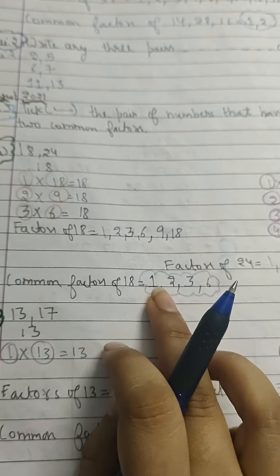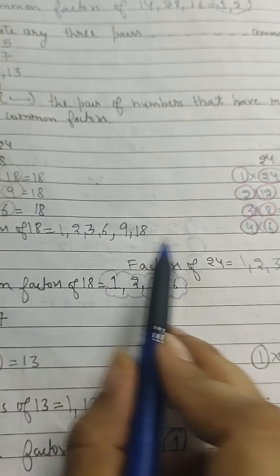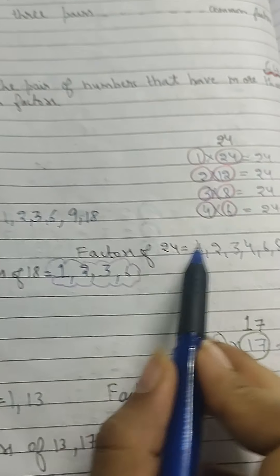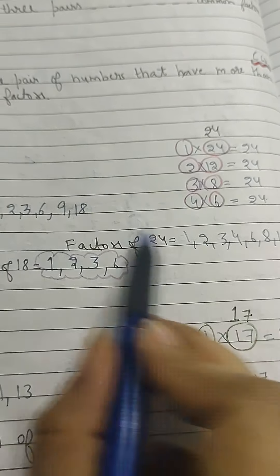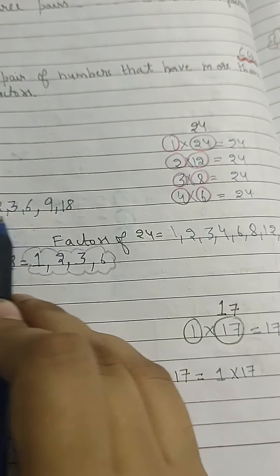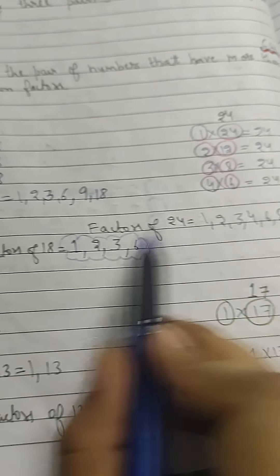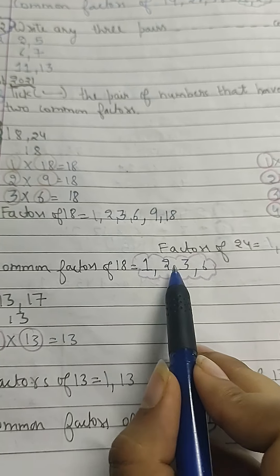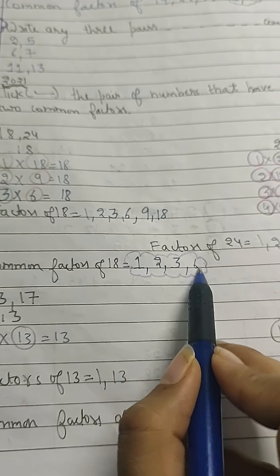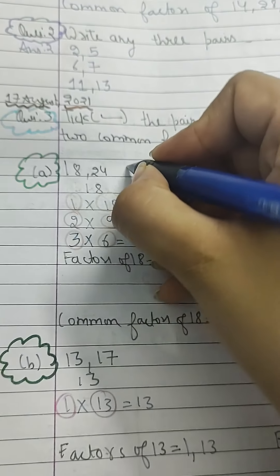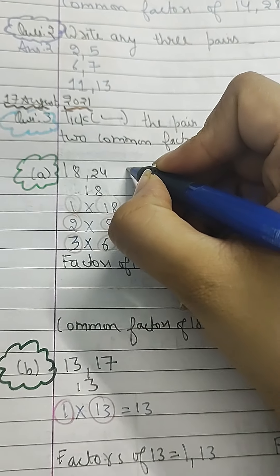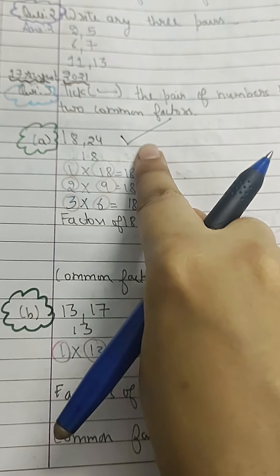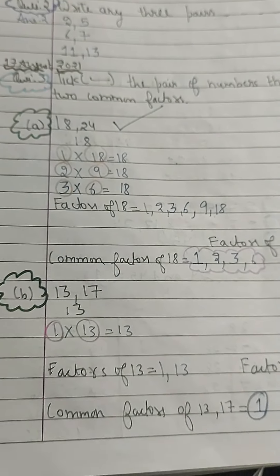Now we have to find out the common factors. So 1 is common, 2 is common, 3 is common, then 6 is common. No other factor is common. So we have 4 common factors — 1, 2, 3, 6. That is more than 2 common factors, so we are going to put a tick on it.